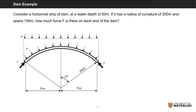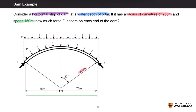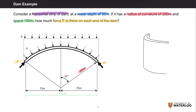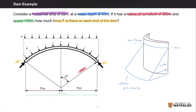The third and final problem of the week is this example of a dam. Consider a horizontal strip of dam at a water depth of 50 meters. If it has a radius of curvature of 200 meters and spans 150 meters, how much force F is there on each end of the dam? The diagram below is a view of the dam from above, and note that it is not to scale. I'm drawing a 3D view of the dam to show how the water pressure is acting on it and to show the 50 meter depth where the horizontal strip is located.